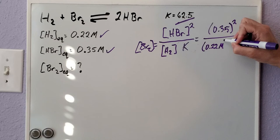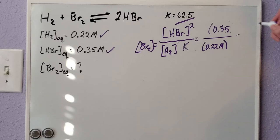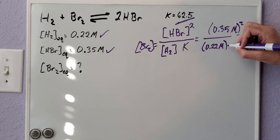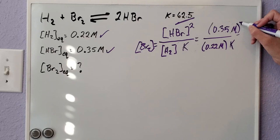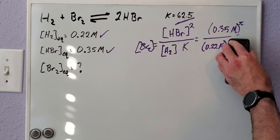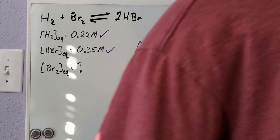Both of these should be molarity. When we solve for this, you should pay attention to your units. M² here, one molarity cancels, so your final answer should still be a molarity. This K we can replace with our value of K of 62.5.